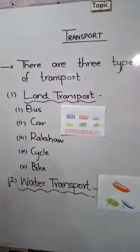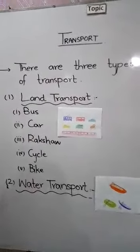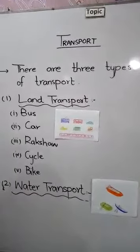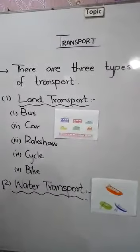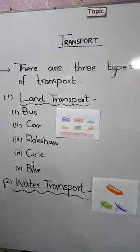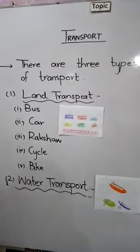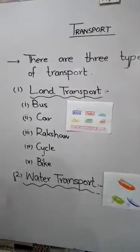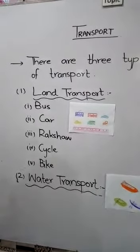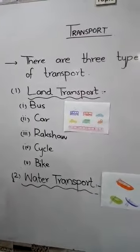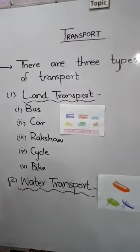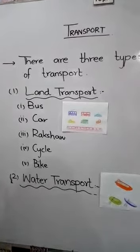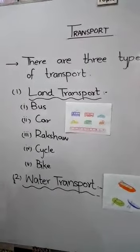Boats and ships are used over a sea, ocean, river, lake or canal in water transport. Most of the trade of different countries is through water transport. Fishermen also use boats to go fishing.